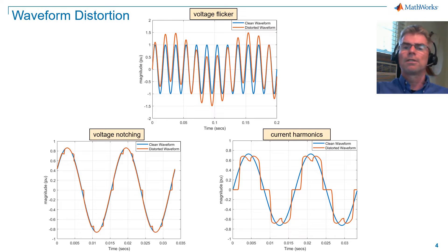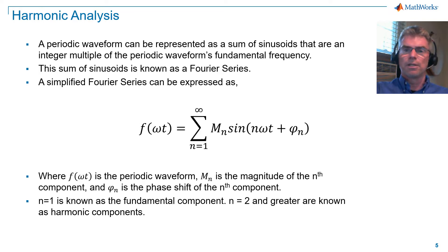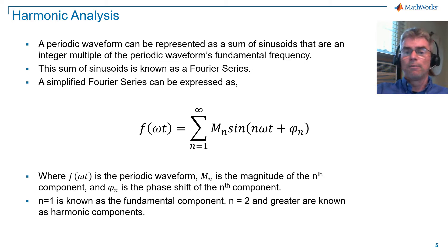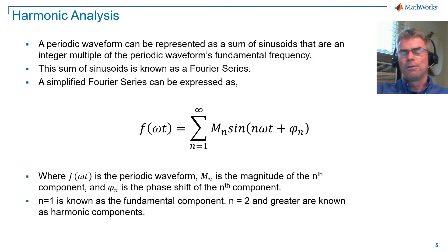Voltage notching is caused by power electronics, and so is a specific example of harmonic distortion. More generally, harmonics are frequency components greater than the system frequency, and so we need a way to quantify the harmonic distortion. The way we do this is to perform harmonic analysis. A periodic waveform can be represented as a sum of sinusoids that are an integer multiple of the periodic waveform's fundamental frequency. This sum of sinusoids is known as a Fourier series. Here you can see the expression of a simplified Fourier series, where f(ωt) is the periodic waveform, m sub n is the magnitude of the nth component, and φ sub n is the phase shift of the nth component. n equals 1 is known as the fundamental component, and n equals 2 and greater are known as harmonic components. For more information on Fourier series, you'll find extensive literature online.